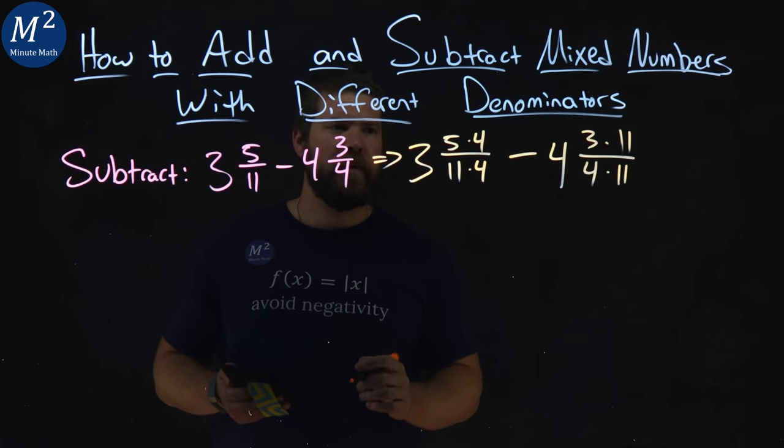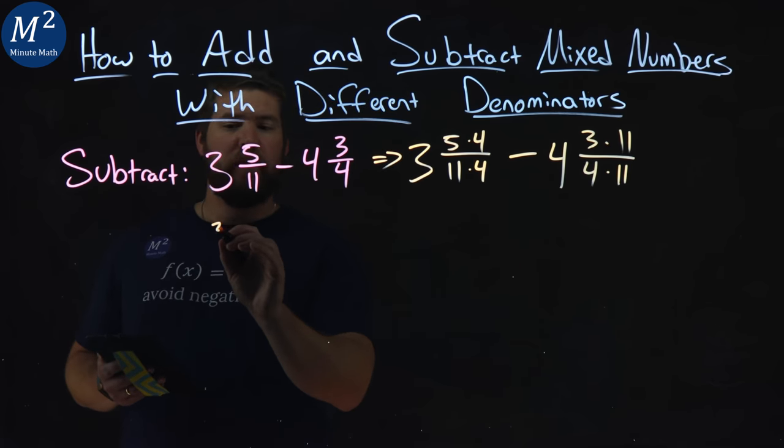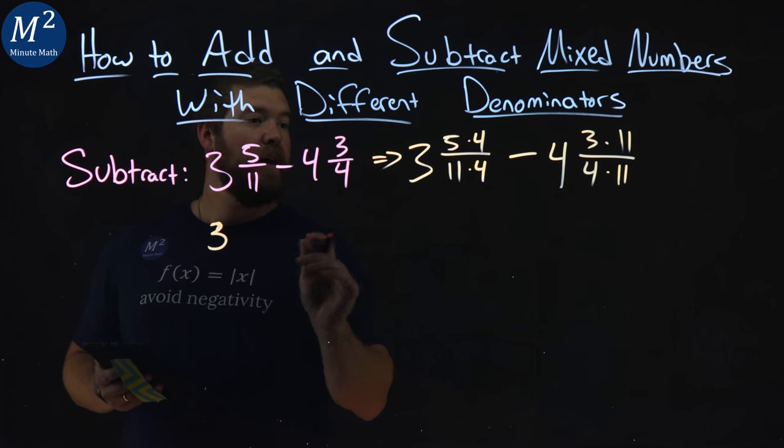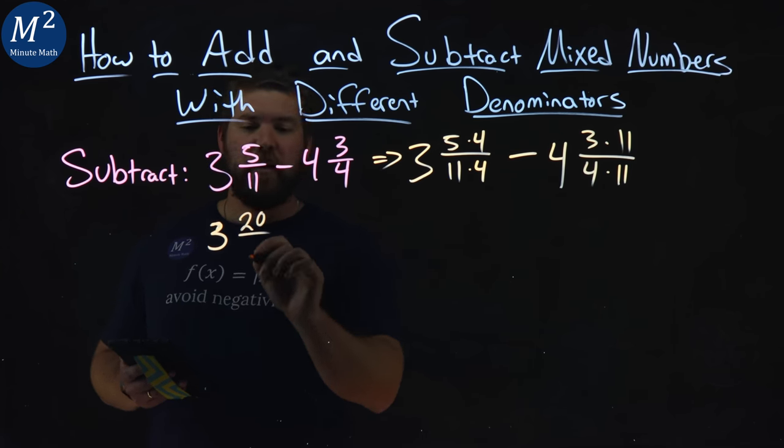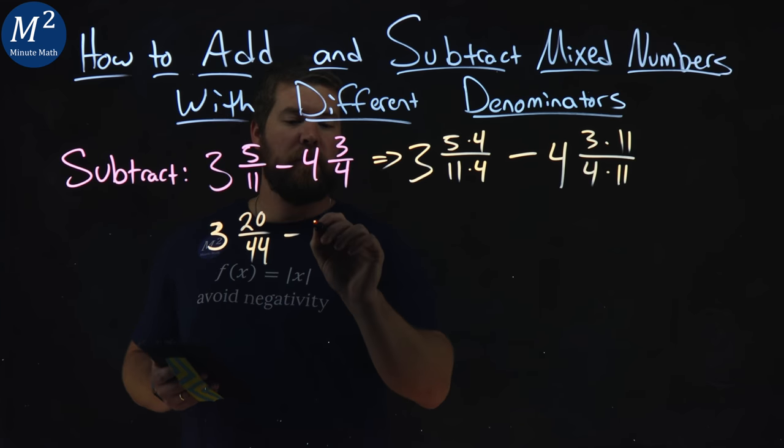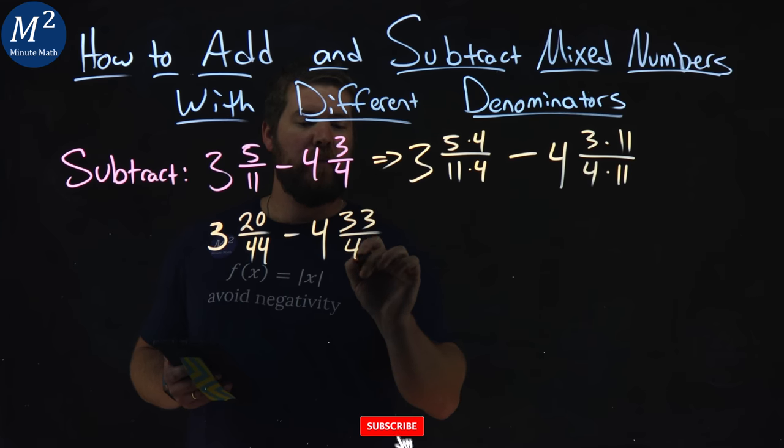So, what does that simplify to be? Well, we have 3, and 5 times 4 is 20, over 11 times 4 is 44, minus 4, 3 times 11 is 33, over 44.